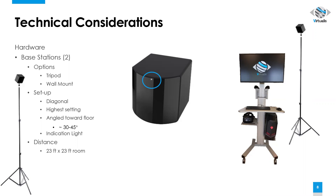When the base stations are set up, they should be angled about 30 to 45 degrees toward the floor. You can see in the base station an indication light that tells us what is happening with our base stations. If they are not connected, that indication light will be white or blue.